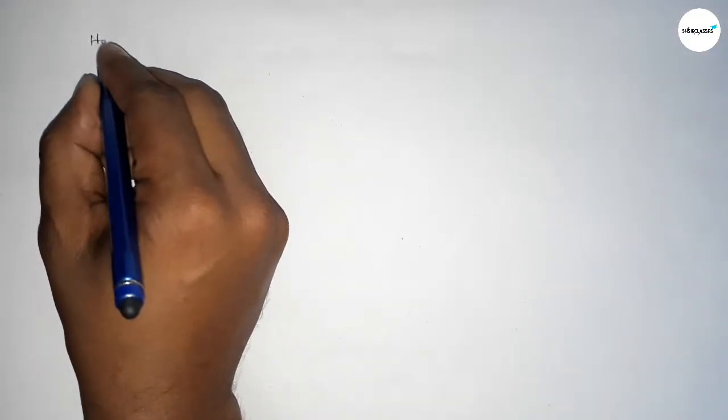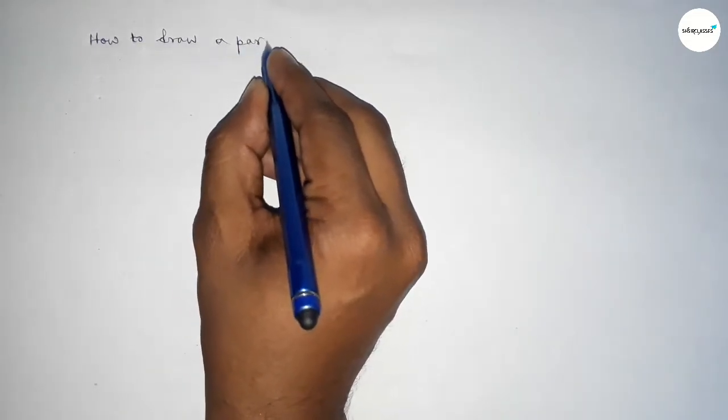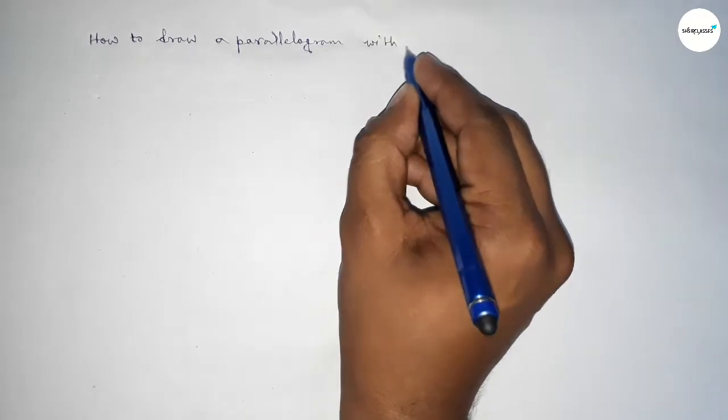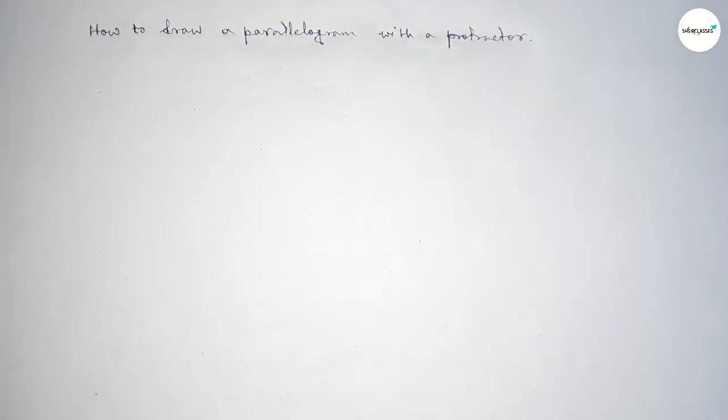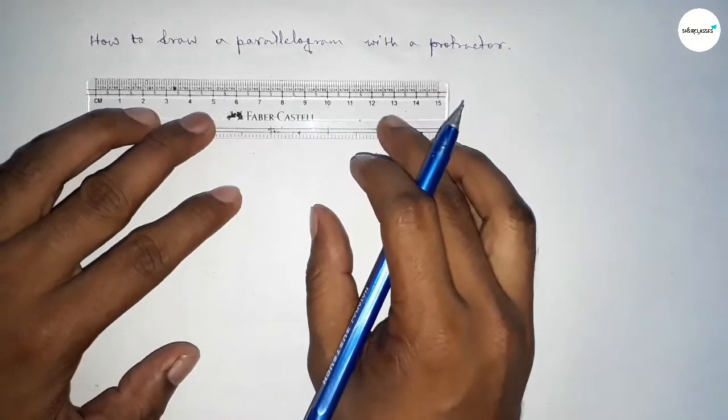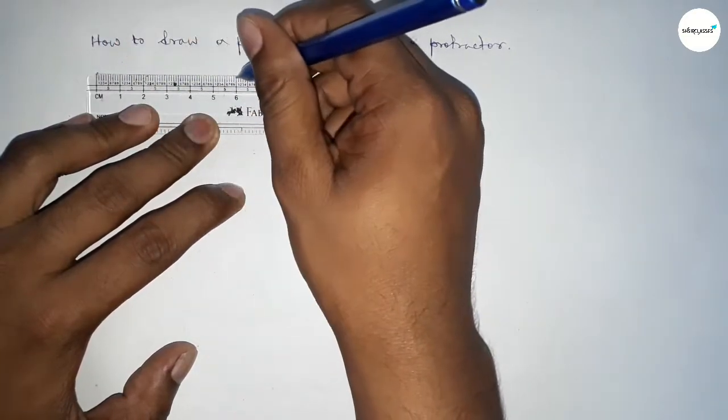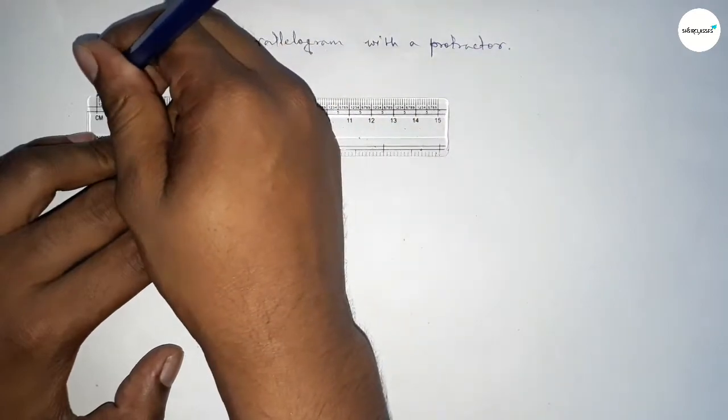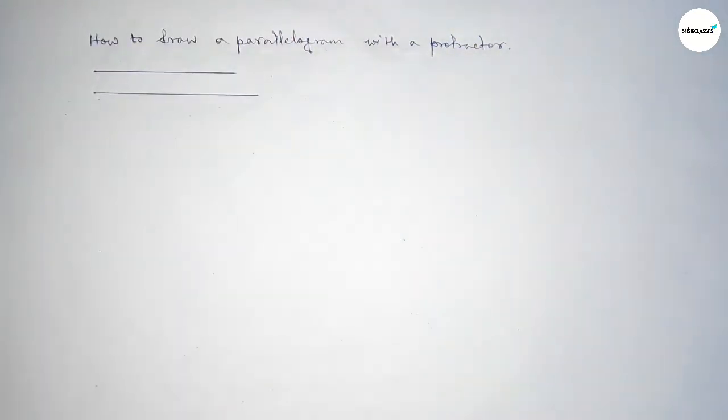Hi everyone, welcome to SI Share Classes. Today in this video, we have to draw a parallelogram with a protractor in an easy way. So let's start the video. First of all, drawing here two sides of the parallelogram: a line of length 6 centimeters and another line of length 7 centimeters. You can take any length.